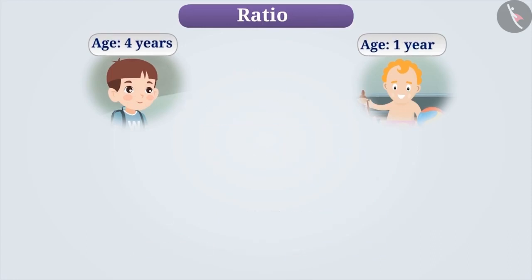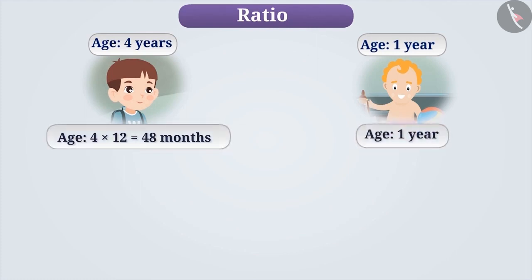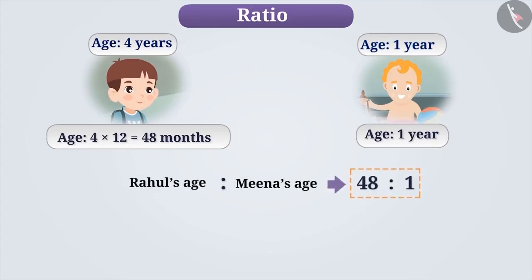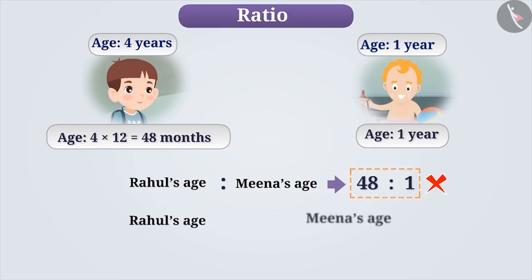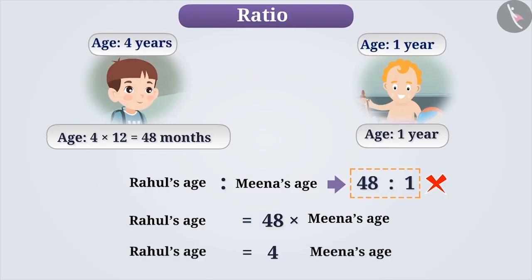Now consider this case. If we represent Rahul's age in months — that is, 4 into 12 which is equal to 48 — instead of 4 years, and Meena's age is represented as 1 year, then will it be correct to write the ratio of Rahul's age to Meena's age as 48 is to 1? This will result in an incorrect ratio because it shows that Rahul's age is 48 times that of Meena's age. But from the given ages, it is clear that Rahul's age is 4 times that of Meena's age. Thus, 48 is to 1 is not the correct ratio. In order to get the correct ratio, it is necessary to keep the units of the quantities the same.